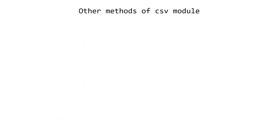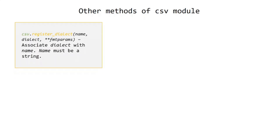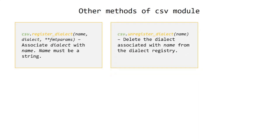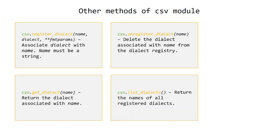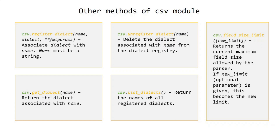Other methods of the CSV module: register_dialect() — associates a dialect with a name; the name must be a string. unregister_dialect() — deletes the dialect associated with a name from the dialect registry. get_dialect() — returns the dialect associated with a name. list_dialects() — returns the names of all registered dialects. field_size_limit() — returns the current maximum field size allowed by the parser; if the optional new_limit parameter is given, it becomes the new limit.